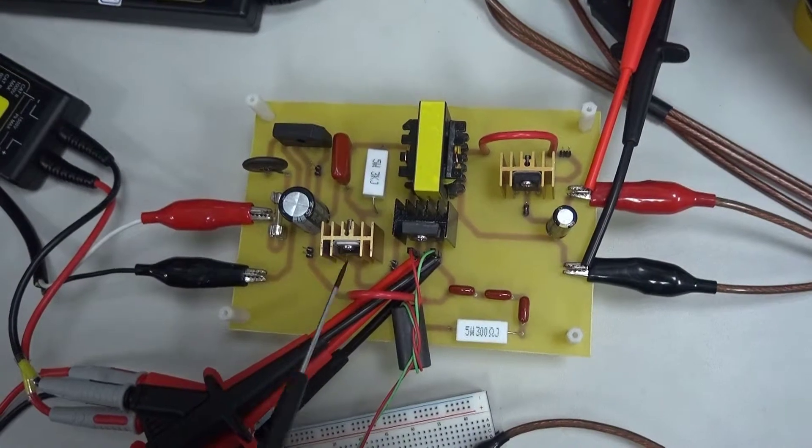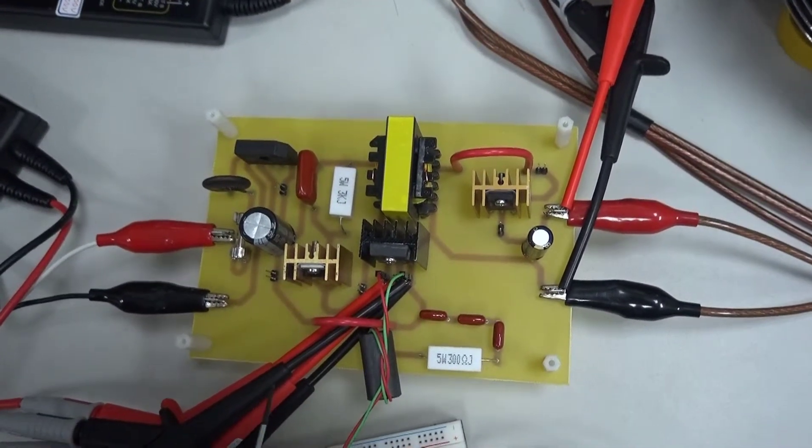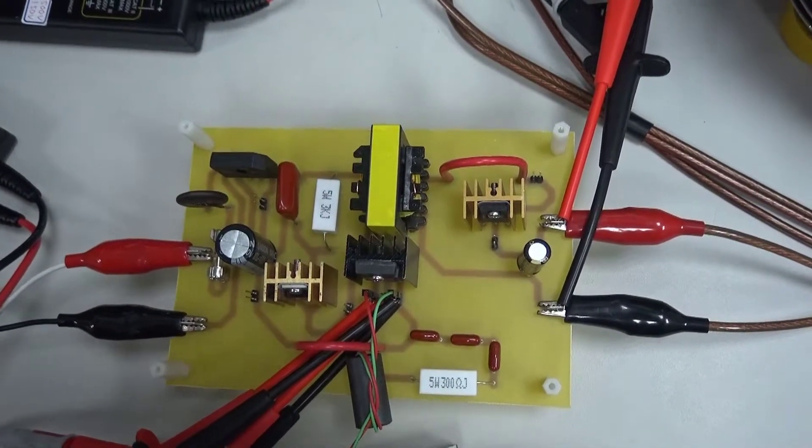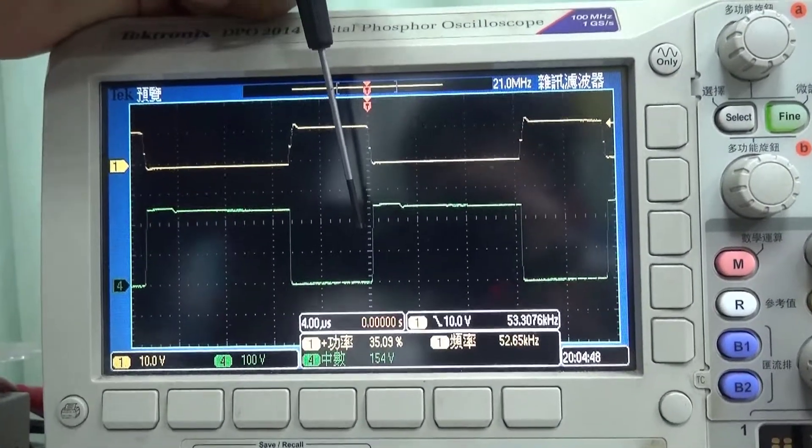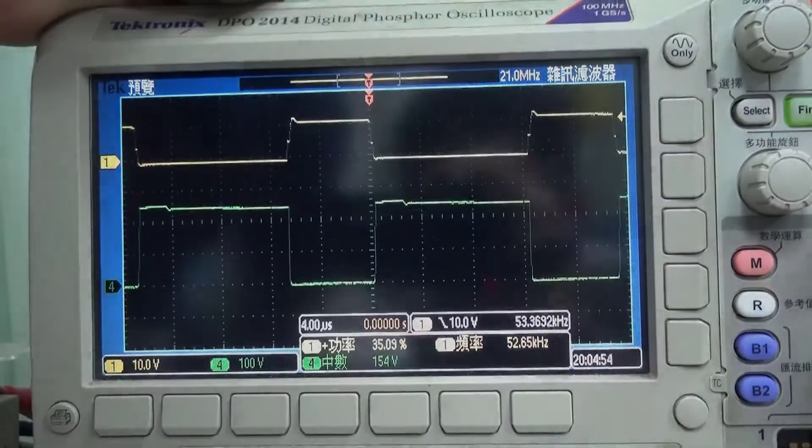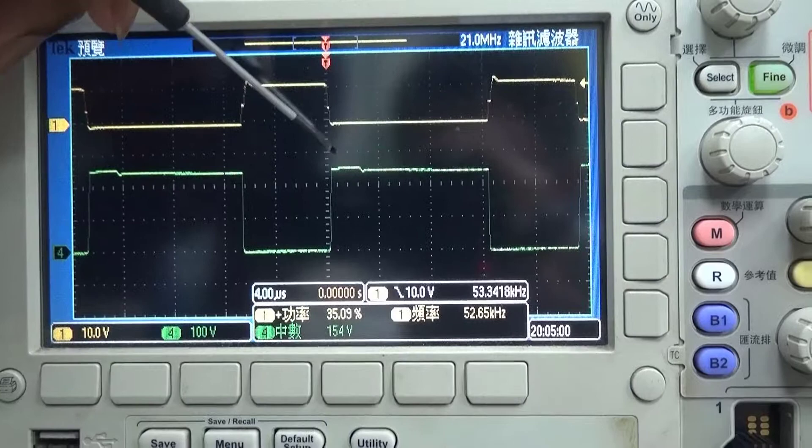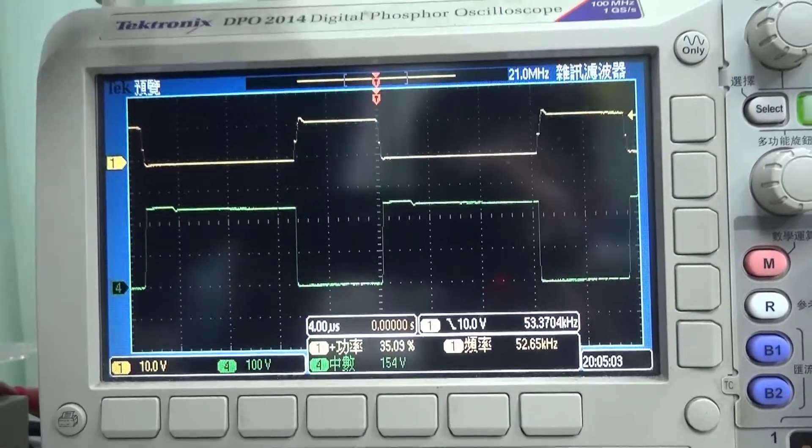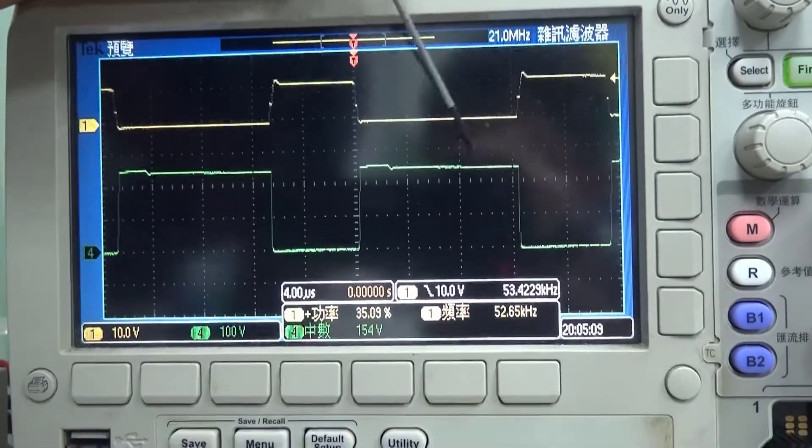Here we have our probes configured for the measurement of the voltage across the gate and the source of the MOSFET as well as the drain and the source of our MOSFET. Here we can see the VGS waveform as previously seen as well as our VDS waveform. The spike expected as well as the ringing across the waveform have both been dealt with using our RCD and RC snubbers.